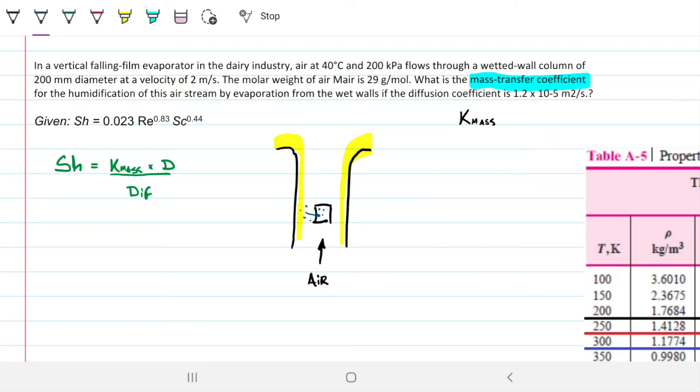For that to happen, we need mass transfer. We need molecules to go from the liquid into the air. Air is coming in at 2 meters per second. It's at 40 Celsius or 313 Kelvin. We're given the molecular weight of air as 29 grams, I'm going to convert this into kilograms per mole. We're also given the diffusion coefficient, which is how easy it is for these molecules to go into this other matter, how easy it is for the water molecules to go into the air molecules.